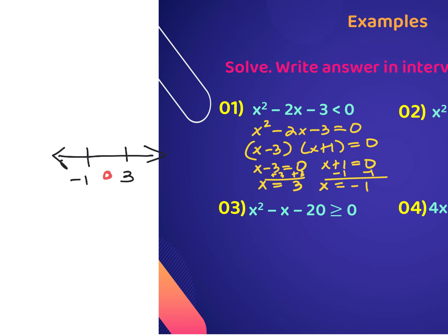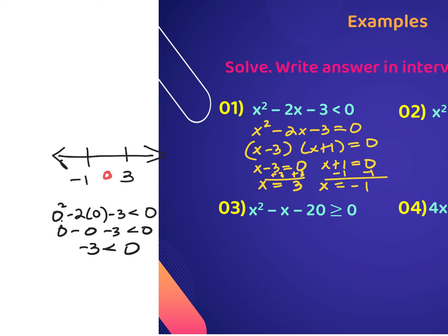I plug 0 into the original problem: x² - 2x - 3 < 0. So 0² - 2(0) - 3 < 0 gives us -3 < 0. Is this true or false? It's true — negative 3 is less than 0. Because this is a true statement, the section where 0 is located gets a check mark. The numbers less than -1 and greater than 3 are not going to work for this inequality.